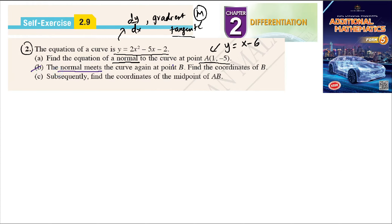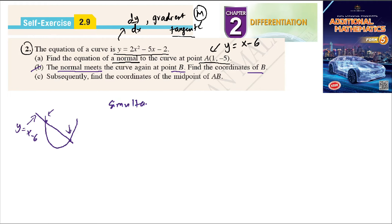Part B: the normal meets the curve again at point B. Find the coordinates of B. The normal is a line that intersects the curve at two points — point A and point B. So we need to find the intersection of the normal line y = x - 6 and the curve y = 2x² - 5x - 2 using simultaneous equations.